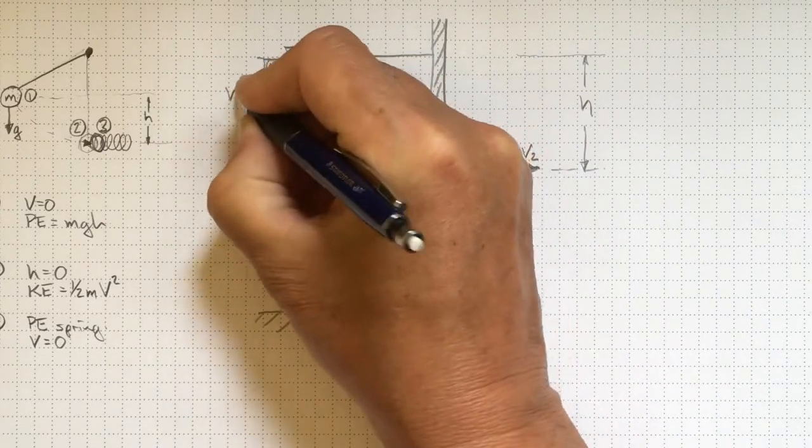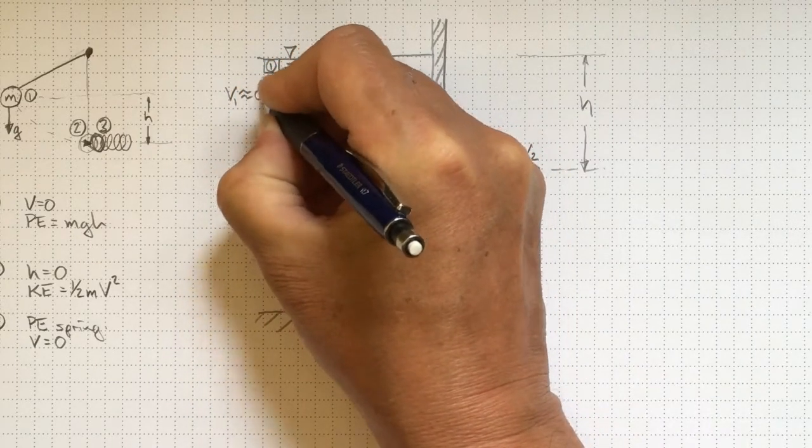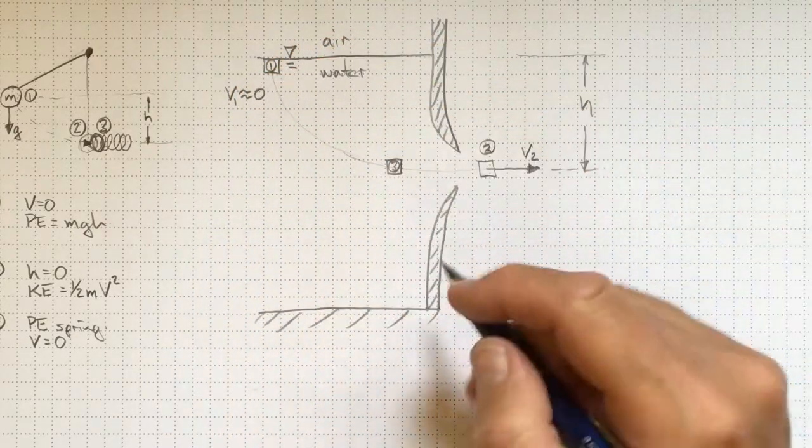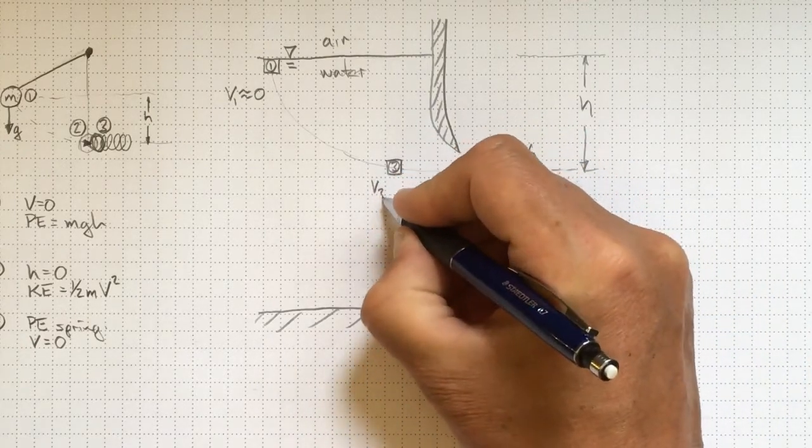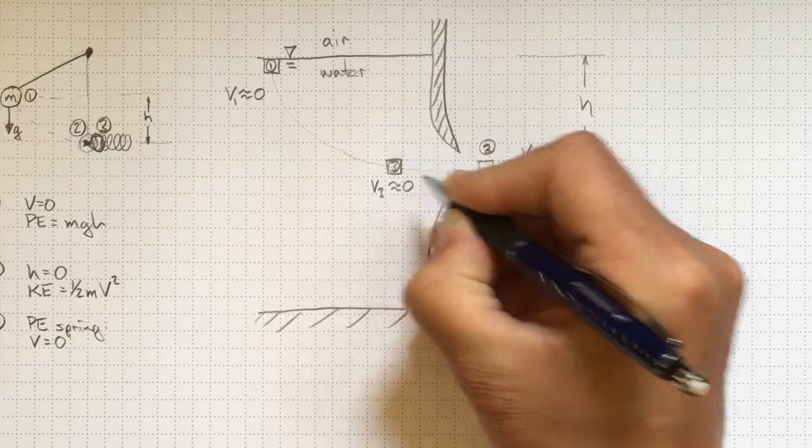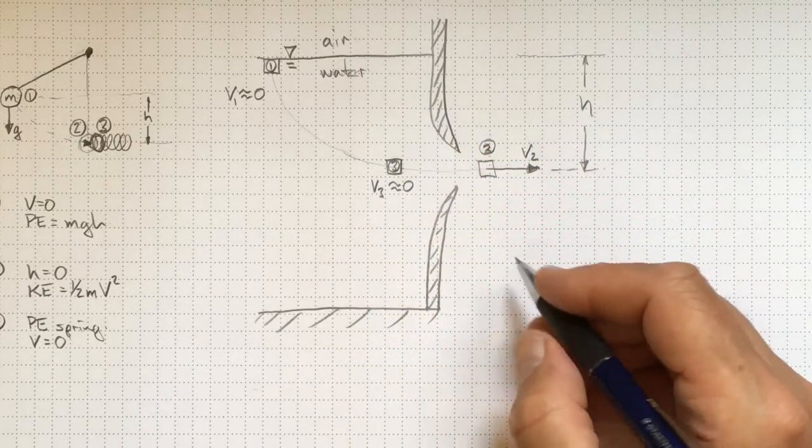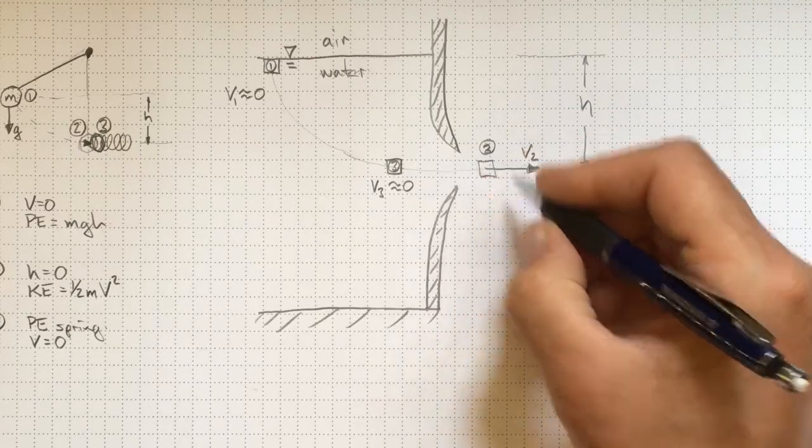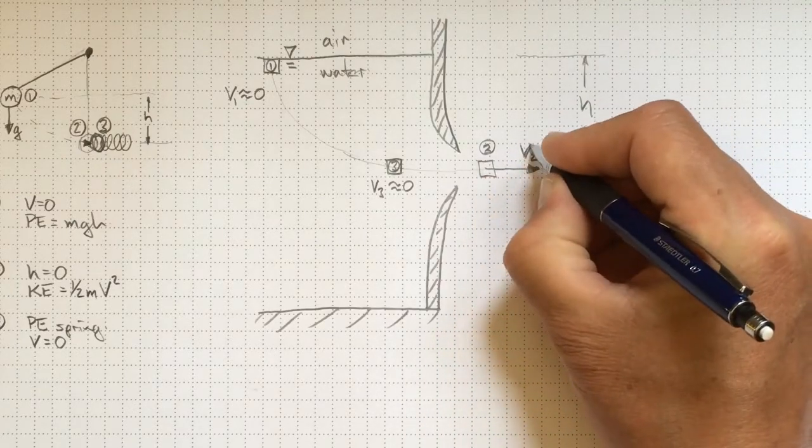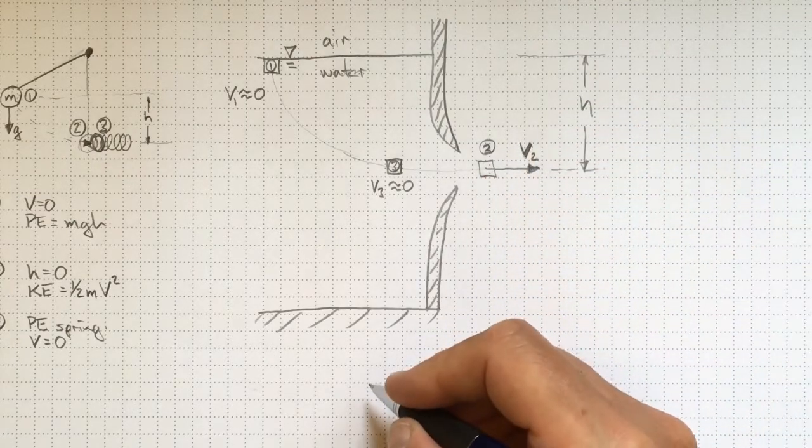So location one, v1 is very close to zero. It's hardly moving. So very little kinetic energy. v3 also very close to zero. Very little kinetic energy. But as it accelerates through this opening, we get out here to location two where v2 is quite substantial, quite large.